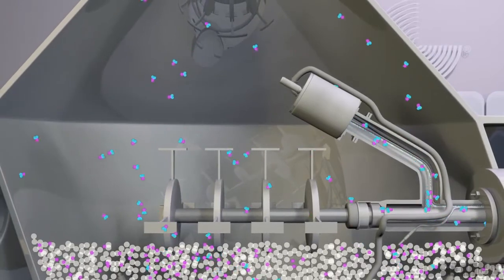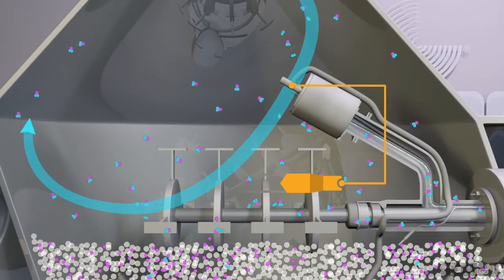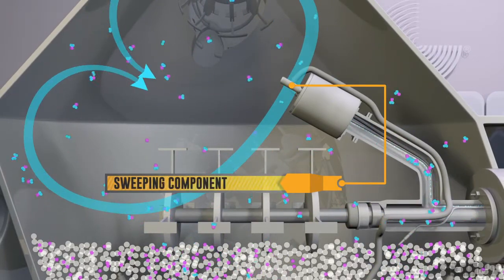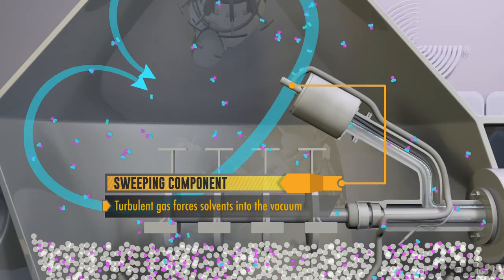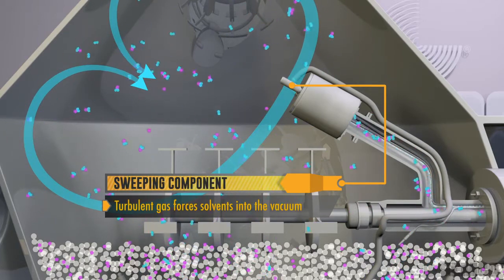Uneven drying is also mitigated with the sweeping component of JEMCO's gas purge system. Sweeping works by pumping a gas such as nitrogen into the void space above the bed of material, creating a turbulence that sweeps solvents or free radicals into the vacuum.